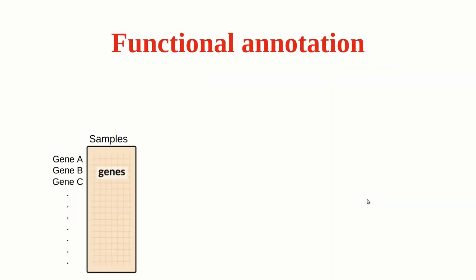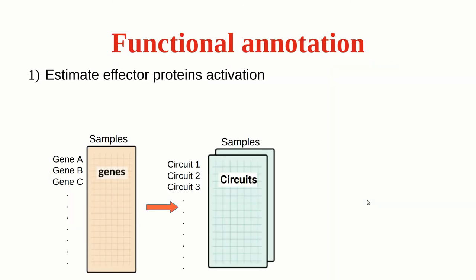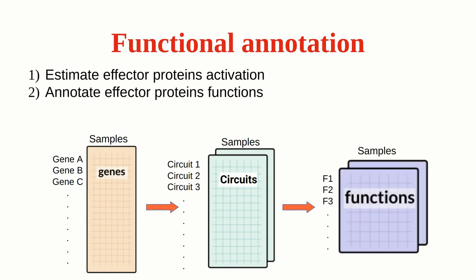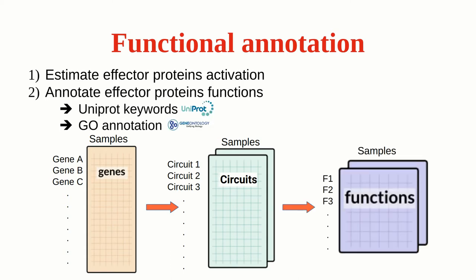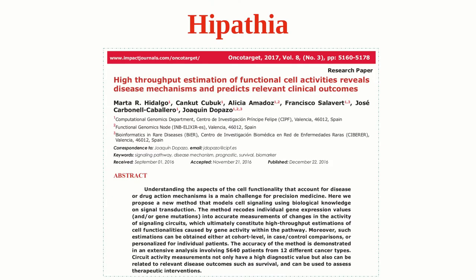So from a given gene expression profile, we estimate an effector protein activation profile, and then we annotate each effector protein using UniProt keywords and Gene Ontology annotation. You will find more information and details about the Hypathia method in our paper.